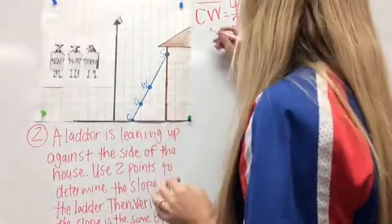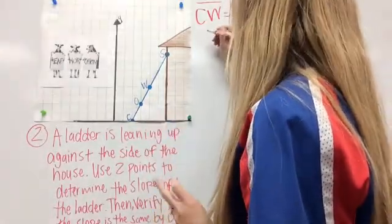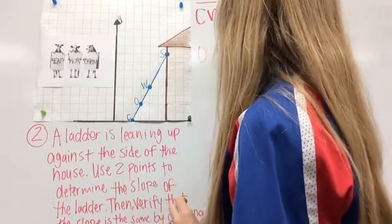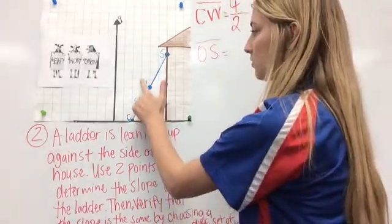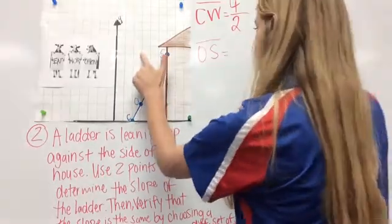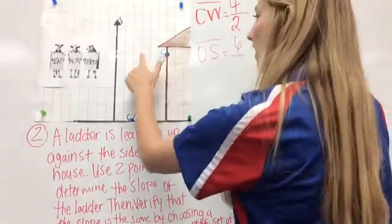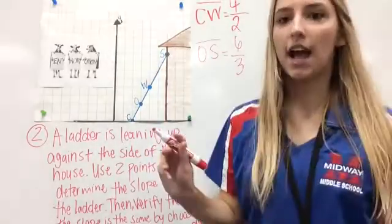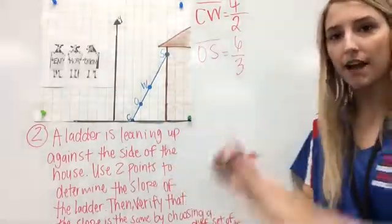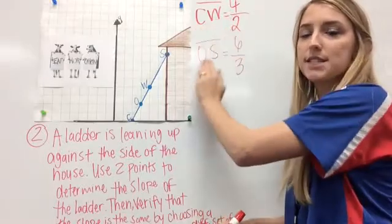Okay? So, then let's just pick two other points. Let's go from O to S. So, I'm rising 1, 2, 3, 4, 5, 6. And, I'm running 1, 2, 3. So, I have two different. I have slope for CW, and slope for OS.